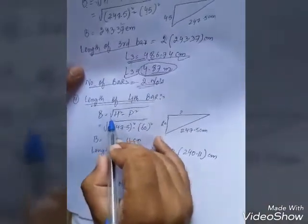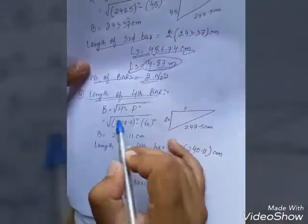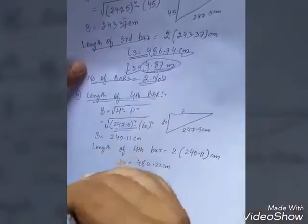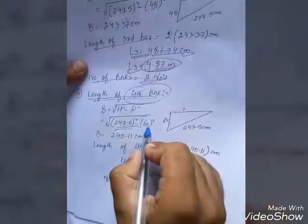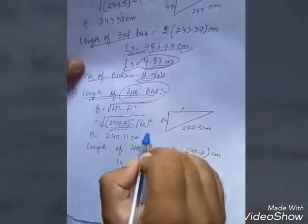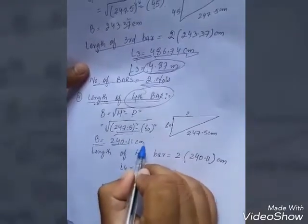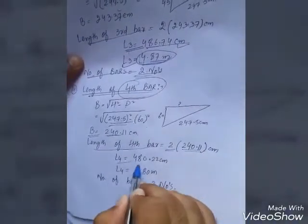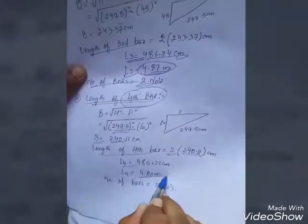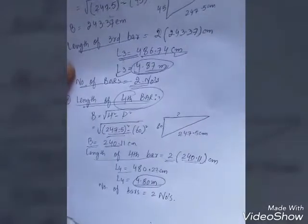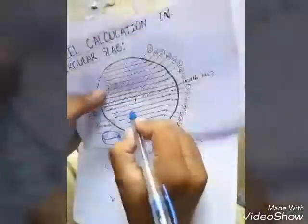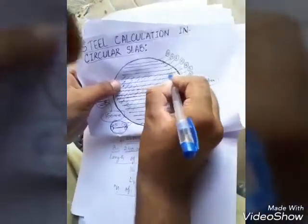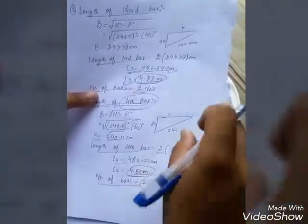For the fourth bar, base equals root of 247.5 squared minus 60 squared, since the perpendicular is 4 times 15 equals 60 centimeters. Base equals 240.11 centimeters. Length of fourth bar is 2 times 240.11 equals 480.22 centimeters, so L4 is 4.80 meters. Number of bars is two.